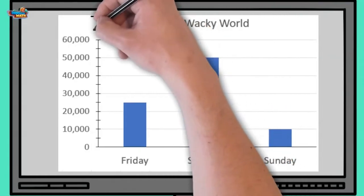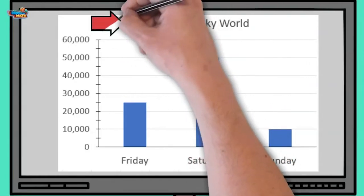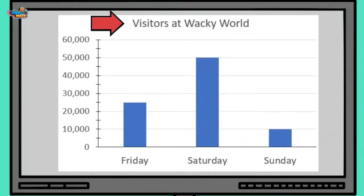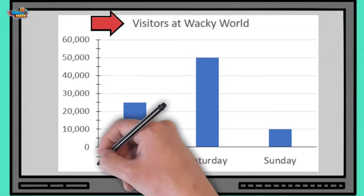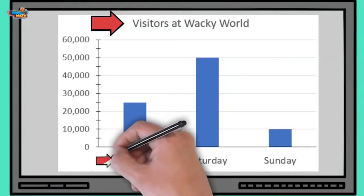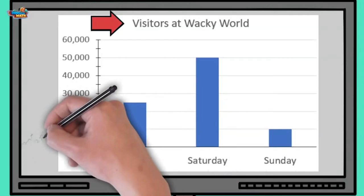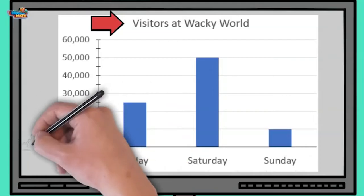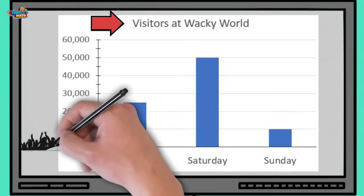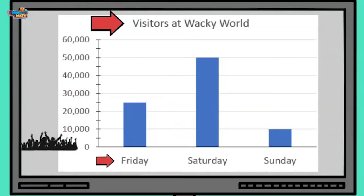Yepers! This here is a bar graph. It gets its name because of the bars used to show the data. The title on this graph states "Visitors at Wacky World." The horizontal axis shows days of the week, and the vertical axis shows the number of people at the park each day.